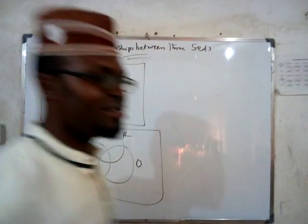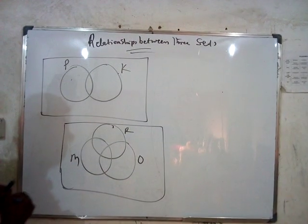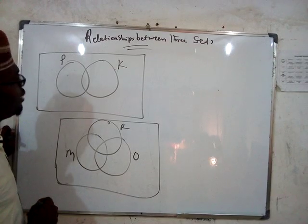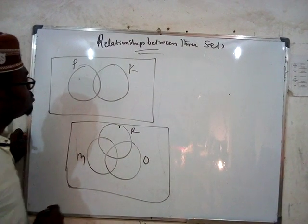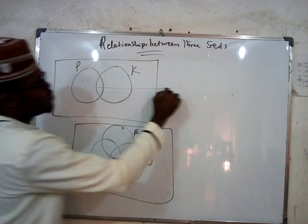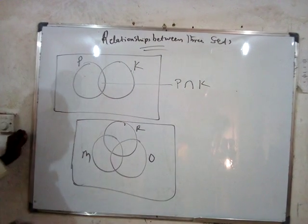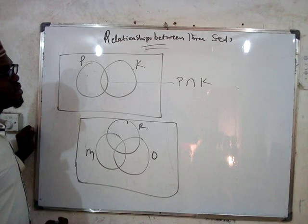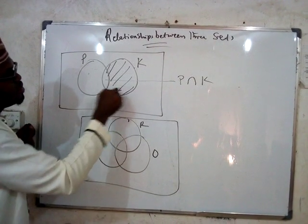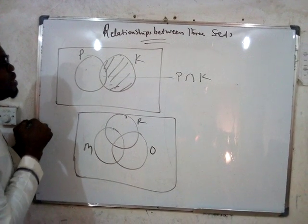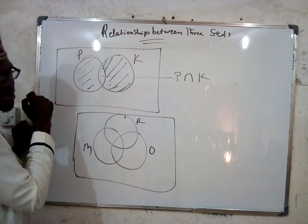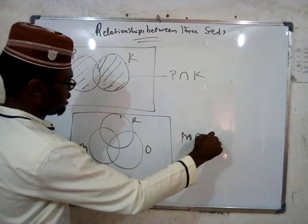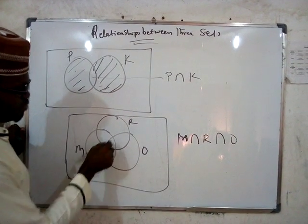Now tell me where we can represent P union Q. Let's start with intersection — where is P intersection Q? It's inside here, where the two circles overlap, and we represent P intersection Q there. Where can we represent only Q? Only K will be on that side. And only P will be on the other side — very, very important. Where do we represent M intersection R intersection O? That should be in the middle, where all three overlap.